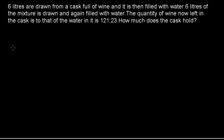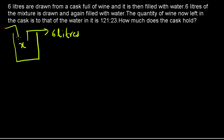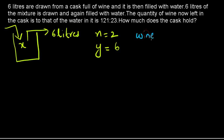Second question: 6 liters are drawn from a cask full of wine and filled with water. 6 liters of the mixture is drawn and again filled with water. The quantity of wine left to water is 121:23. How much does the cask hold? We don't know the initial quantity, so let it be x. Here y = 6 and n = 2. The ratio of wine left to initial quantity can be found from the given information.